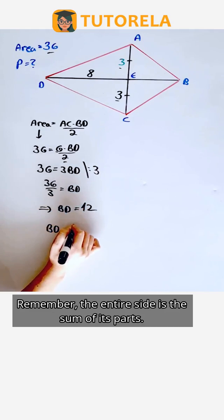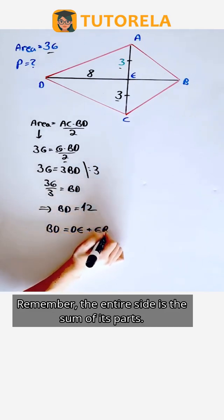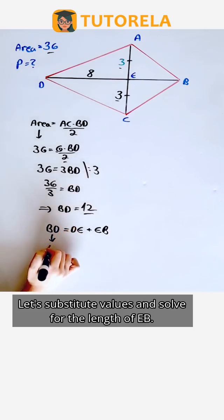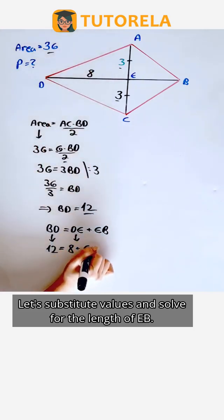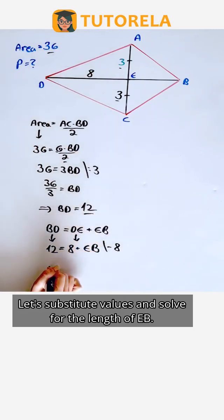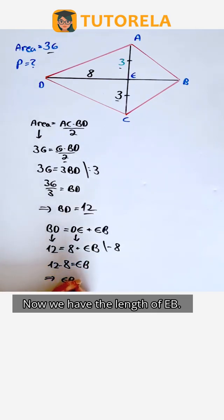Remember, the entire side is the sum of its parts. Let's substitute values and solve for the length of EB. Now we have the length of EB.